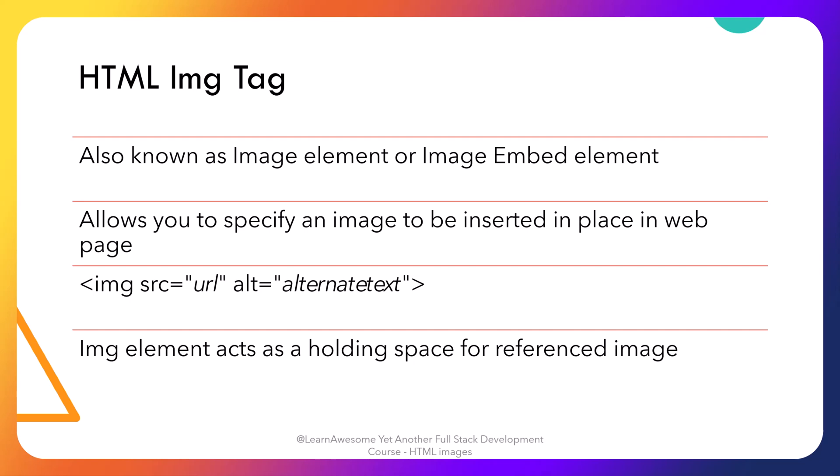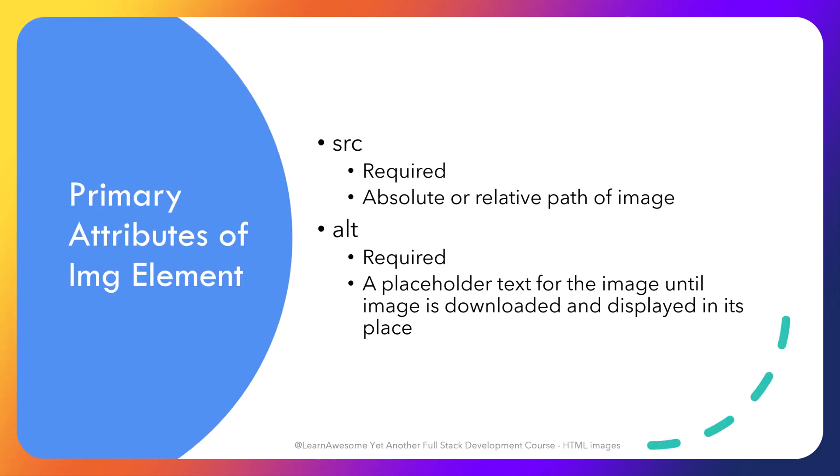Usually the image is inserted at the exact location where it occurs in the HTML document, but there are tons of ways to manipulate its location alongside text, covering a vast number of use cases. The image element is defined by the img tag and technically adds a holding space for the referenced image. There are two required attributes of the image tag: source and alt.